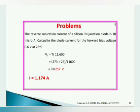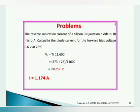Another problem: the reverse saturation current of a silicon PN junction diode is 10 microamps. Calculate the diode current for a forward bias voltage of 0.6 volt at 25 degrees Celsius. Here VT equals T/11600, where temperature is 273 + 25 = 298 K, divided by 11600, giving VT. Using the diode current equation, I is obtained as 1.174 amps.